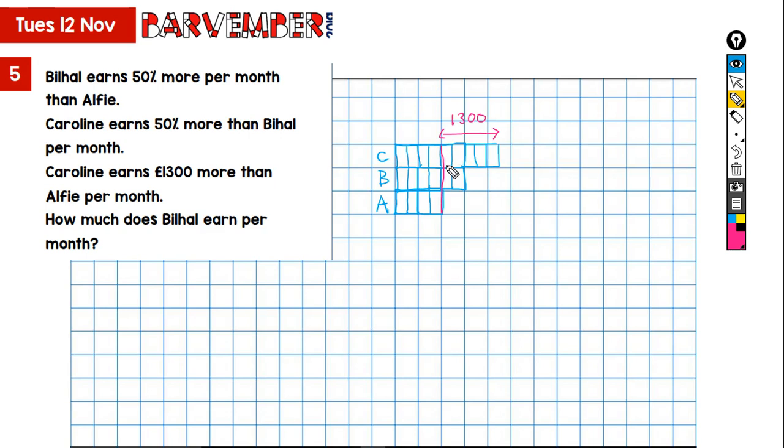So if I want to know the value of each of these, I need to divide 1,300 by 5. So that's going to be 260. So each of these is worth 260.